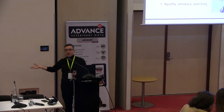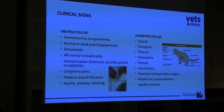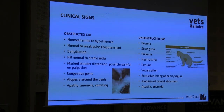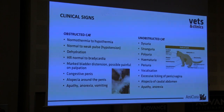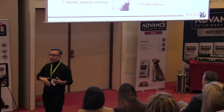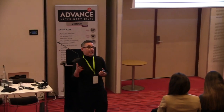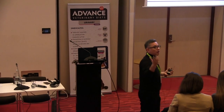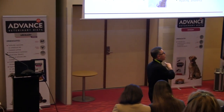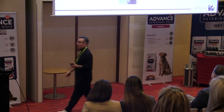On the other side, the non-obstructed cat can present dysuria, stranguria, pollakiuria, hematuria, vocalization, excessive licking of the penis or vagina, and alopecia of the caudal abdomen. That is important and uncommon, but you can find alopecia in the caudal abdomen. You might think this cat presents alopecia from allergies or fleas, but you have to consider this in your differential diagnosis. Also apathy and anorexia.